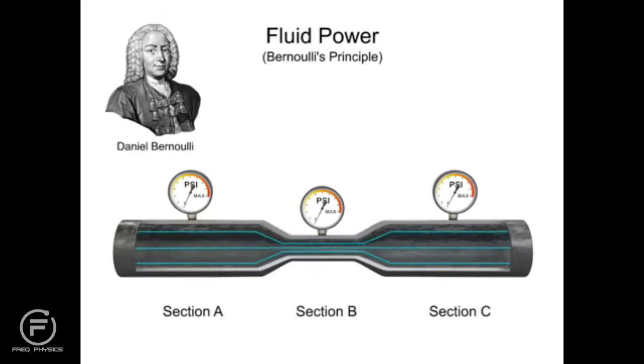Bernoulli's Principle states that an increase in the speed of an incompressible fluid occurs simultaneously with a decrease in pressure. This is illustrated by the flow of water through a pipe. The volume of water flow through all three sections is the same. When the water's flow is restricted in Section B, the speed of the water increases to maintain the same amount of volumetric flow. This increase of speed simultaneously causes a decrease in pressure. When the flow of water reaches Section C, the inverse occurs. The water flow decreases and the pressure increases.